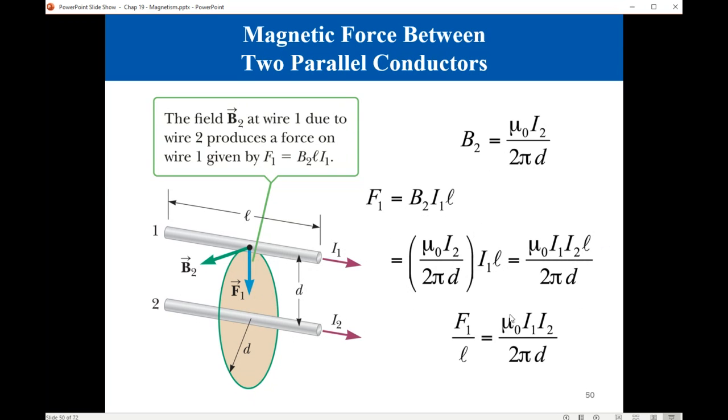If we divide by L, we get the force per unit length: μ₀I1I2 divided by 2πD. It is an attractive force if the currents are parallel in the same direction, and a repulsive force if the currents are opposite to each other.